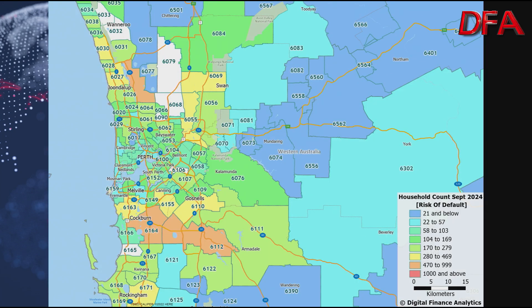In Perth, things aren't too bad in the centre, but going north and south the counts start rising. Postcodes 6164 and 6122, as well as areas to the north towards Wanneroo, show higher levels of default. The key point is that Western Australia is not immune because of recent home price rises — they actually contain some of the highest default levels in the country, not from the current cycle but from the previous cycle when people bought in the early and mid-2000s.